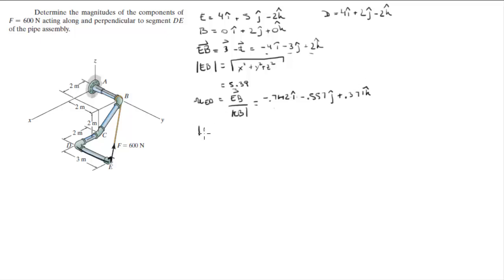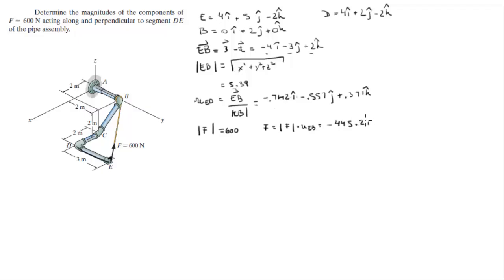Now you're given the magnitude of the force, which is 600 N. So the Cartesian vector form of the force can be found by multiplying the magnitude times the unit vector along which it acts, which is equal to negative 445.2i minus 334.2j plus 222.6k.